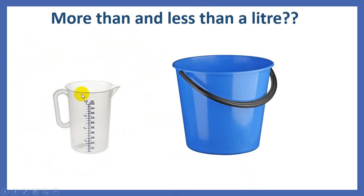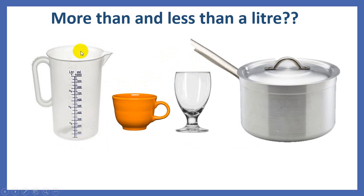I have this jug that has the capacity of 1 liter and this water bucket. Now which has more? Yes, the bucket will have more than a liter. Now I have these different containers in front of me, and all of them will have different holding capacities. This jug is equal to 1 liter. A cup will contain less than a liter. This glass will also contain less than a liter.